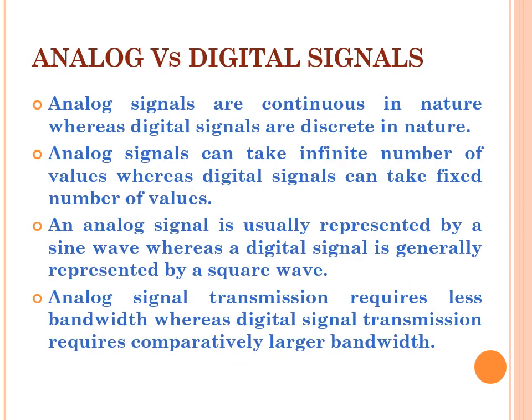Analog versus digital signals — what are the differences? Analog signals are continuous in nature, but digital signals are discrete in nature. Analog signals can have an infinite number of values, but digital signals have a fixed number of values. Analog signals are represented in the form of a sine wave, and digital signals in the form of a square wave.